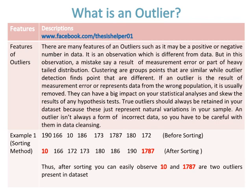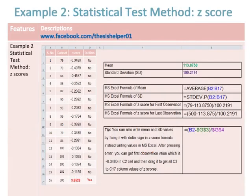Example one is the sorting method. There are nine observations which are not in ascending order. After sorting, you can easily observe that 10 and 1,708 (or similar extreme value) are two outliers present in the data set.